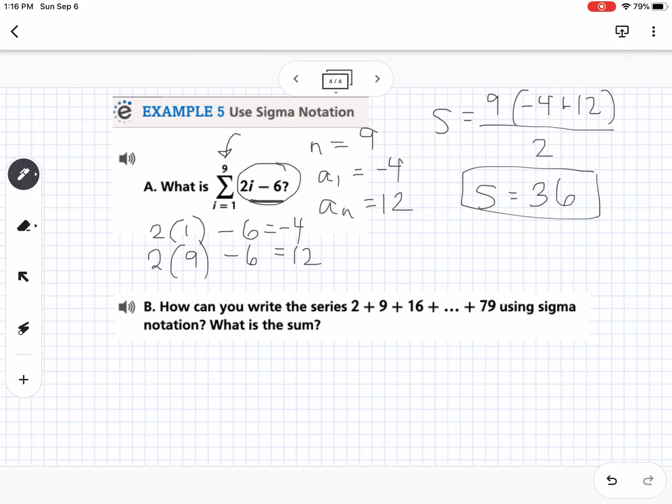Now the next thing is, how can you write the series 2 plus 9 plus 16 all the way to 79 using sigma notation? What is the sum? We want to use that sigma notation. We're always going to put i equals 1 on the bottom. Now we need an explicit formula, and we need to know how many terms there are. Right now, we don't know that. We know that a₁ is 2. We know a_n is 79, but we don't know n. But I'm also going to add in here, we know what d is. We know the common difference. We can see we're going up by 7 each time, so d is 7.